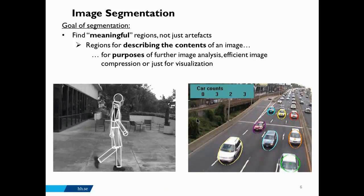The goals of segmentation can be many. By finding meaningful regions of the image, we can apply further processing. For example, we can first try to segment the frame where a person is, and then track where the person is going. By segmenting or detecting where cars are, we can count the number of cars, track cars across lanes, and so on. After segmentation there are many things that can be done.